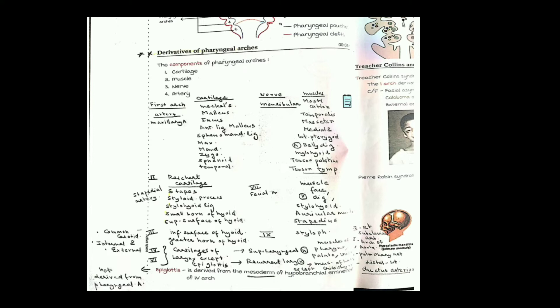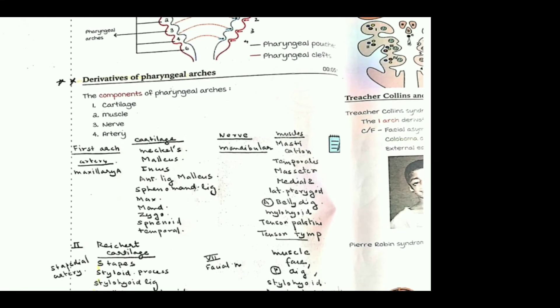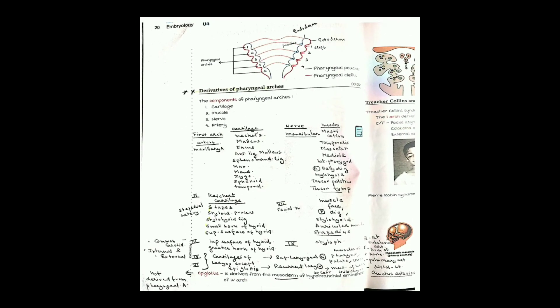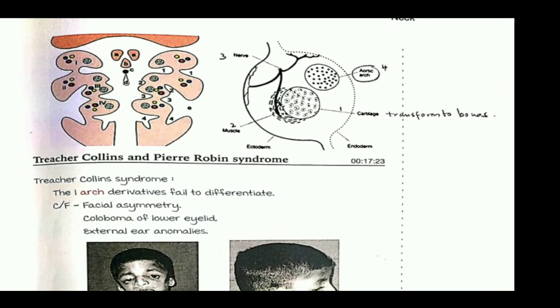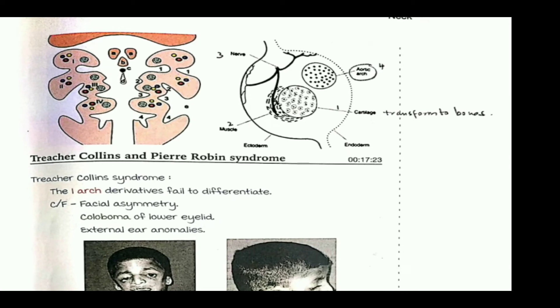This is all very important because questions are commonly asked — for example, in a clinical scenario if a boy has a defect in the first arch, which structures are involved and which are not. To answer these questions, we must know the cartilage, muscle, nerve, and artery components of all the pharyngeal arches.